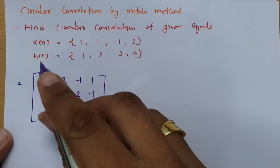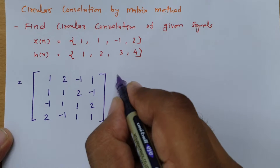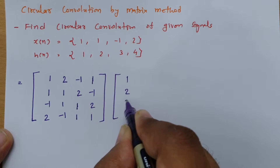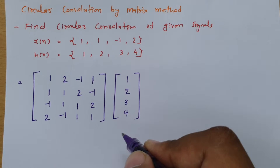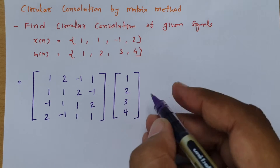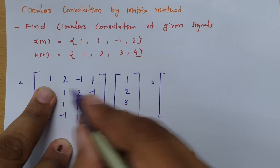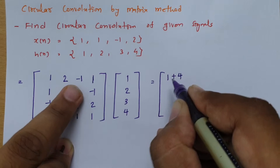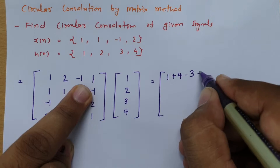The second data for convolution is written as a column vector: 1, 2, 3, and 4. If you multiply these two matrices, the result will be the circular convolution. So computing the first row: 1 times 1 is 1, plus 2 times 2 is 4, plus minus 1 times 3 is minus 3, plus 1 times 4 is 4.